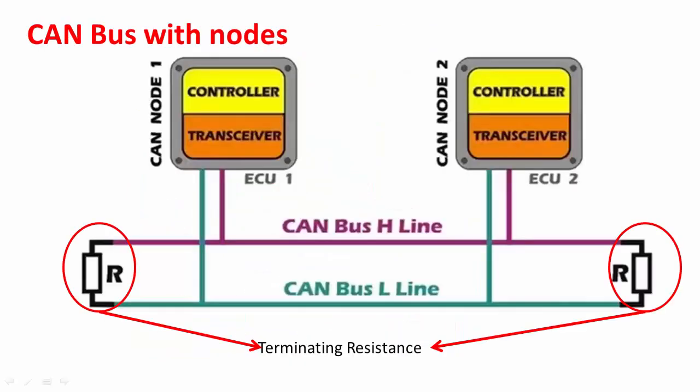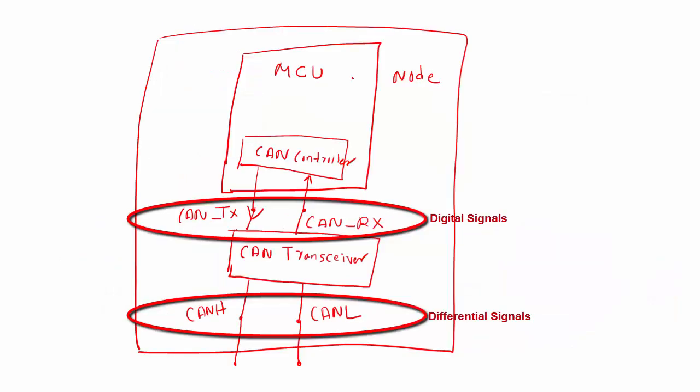That's how a bus with multiple nodes look like. And at the end of the day, you have to communicate over CAN H and CAN L signals. Those are differential signals. And we are going to understand more about these differential signals in the next lecture.